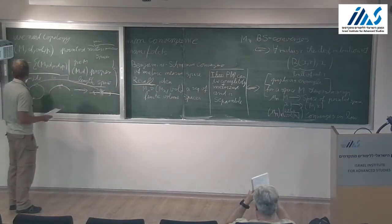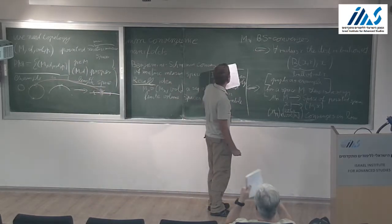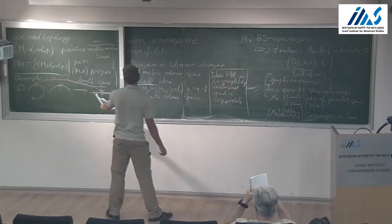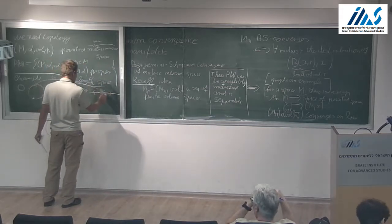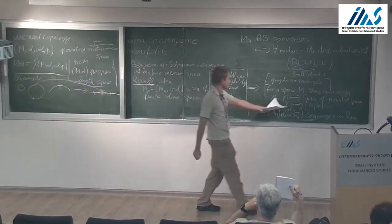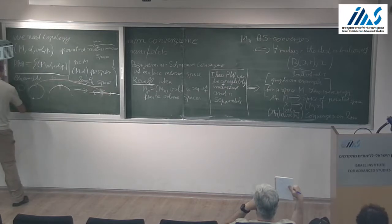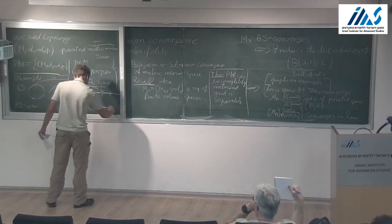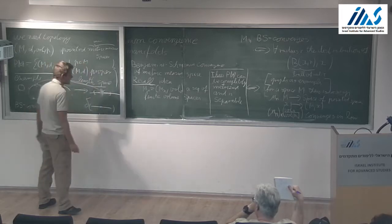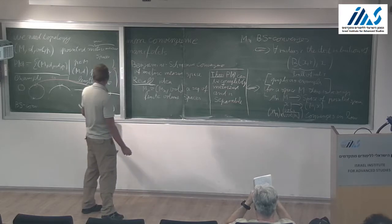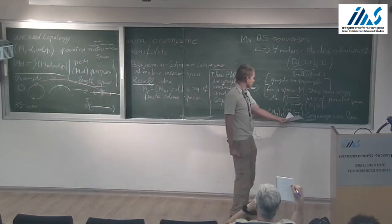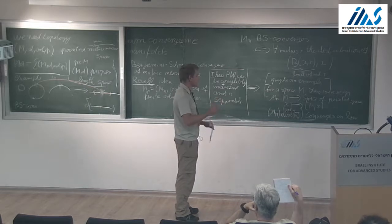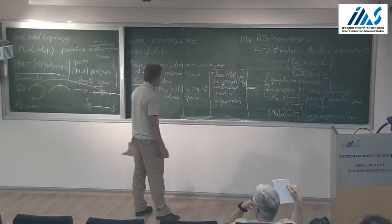In case of Benjamini-Schramm convergence, I did not say anything about a possible limit space. In this case — the circles converging to a line — we have a limit space because if I look at these probability distributions, they will converge to the Dirac measure on the pointed real line. But in general, the limit will not be a Dirac measure. If I know this space is complete, I know there is a limit distribution, but it does not have to be a Dirac distribution — it can be anything.